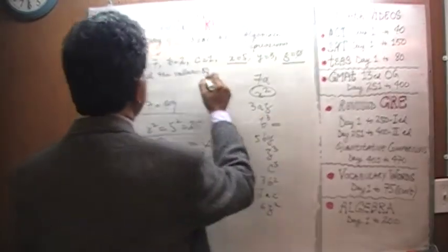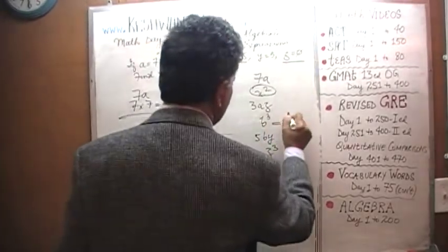B cubed. B cubed, how much is B? B is 2, so it's 2 cubed, which is 8.